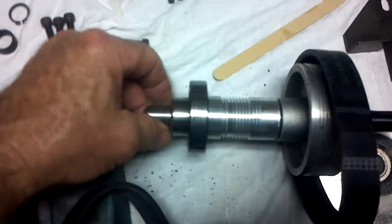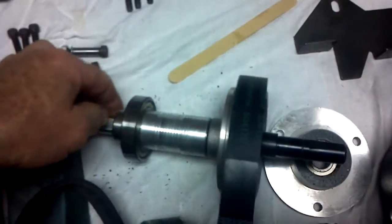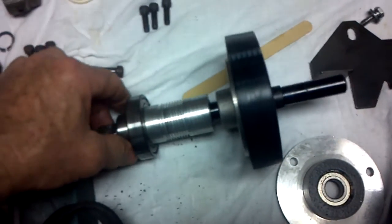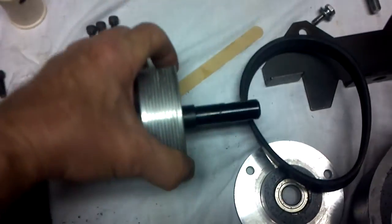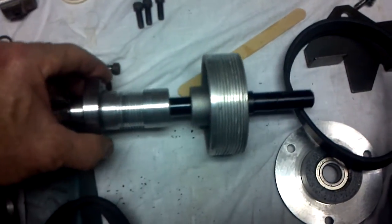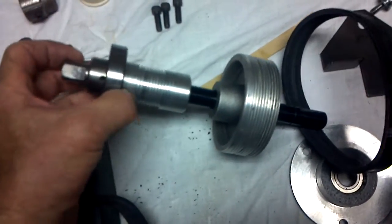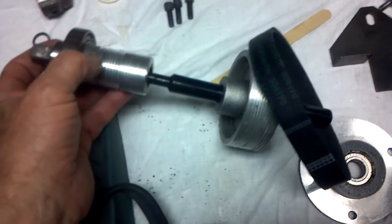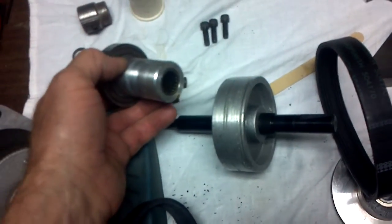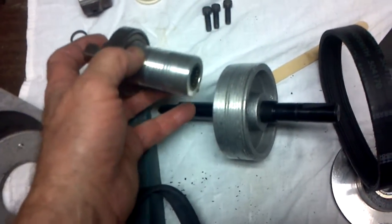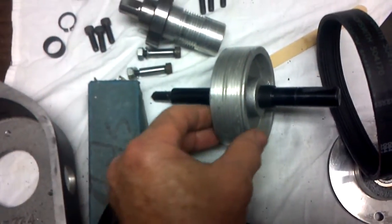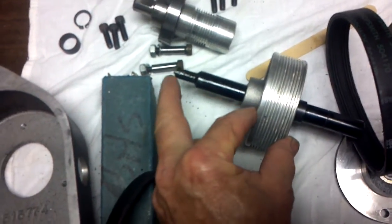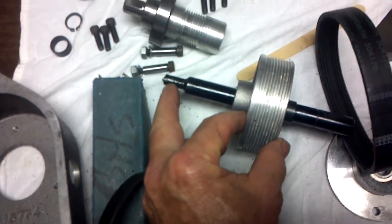And this input/output shaft, this is the output end, the other end obviously being the input. Get this belt off of here. This is a two-piece shaft and it has needle bearings in there - a large needle bearing for the large diameter part of the shaft and a smaller needle bearing for this end.